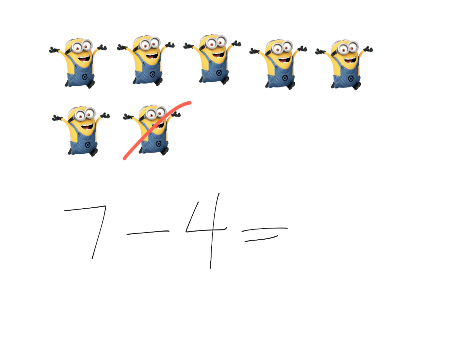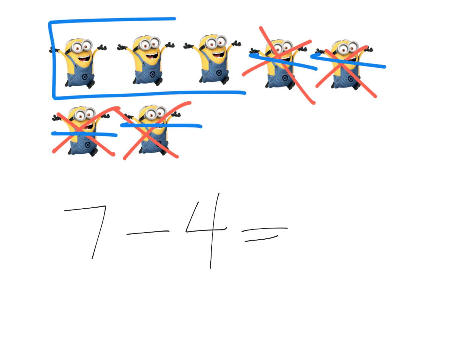And we want to use the take-from system this time. So we're going to cross off 4 of the minions. Now in the directions, they say they just want us to use a horizontal line. Boom, boom, boom, boom, like that. And so what is our answer? Well, we have 3 minions left over, so the answer is 3. So that's the idea.